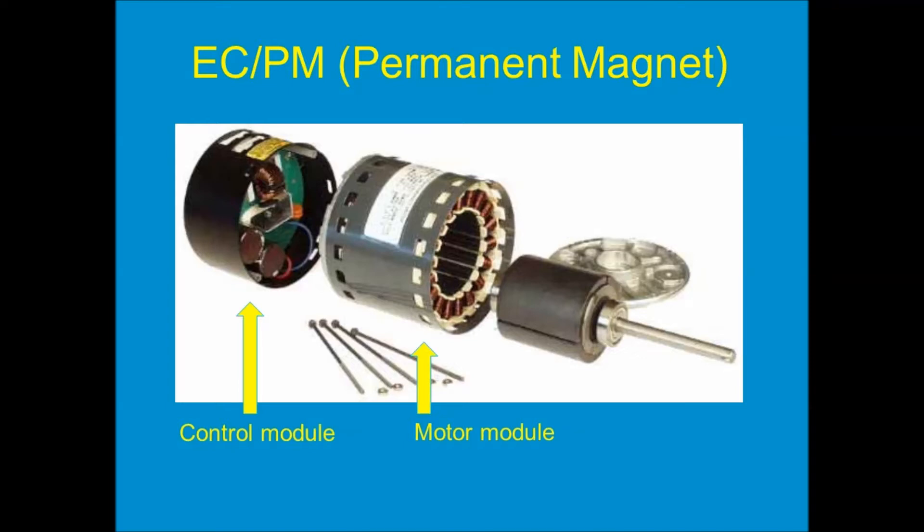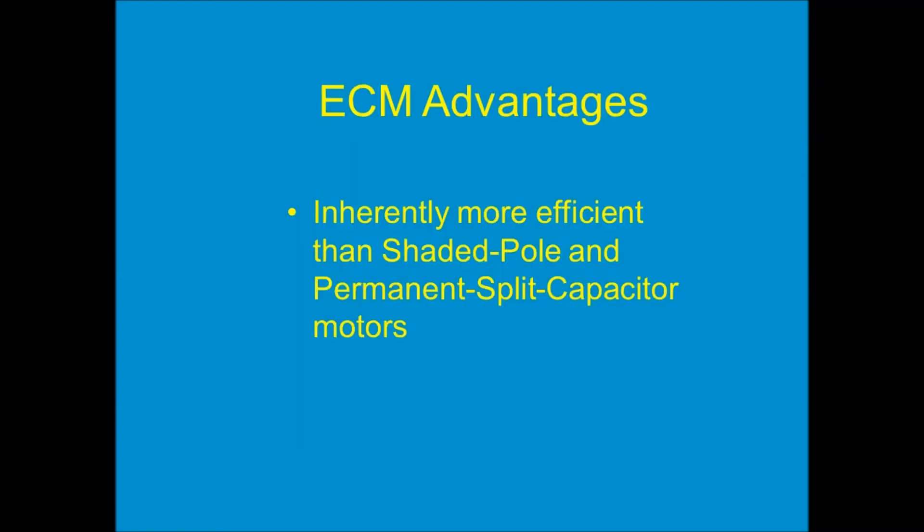That control module allows so much flexibility in the speed and changing speeds and controlling this direct drive motor. There are some really good advantages of the EC motor. First, it's inherently more efficient than older technology motors like shaded pole or permanent split capacitor types. That brushless DC permanent magnet simply operates more efficiently — it delivers more horsepower output per amp drawn in. In other words, you get more work for the same amount of electricity being drawn off the grid.